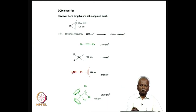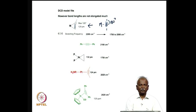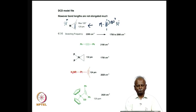This is usually understood in terms of the Dewar-Duncanson-Chatt model and is also indicated by stretching frequency changes. The stretching frequency of a C≡C typically lies in the region of 2200 cm⁻¹ for a free acetylene. For diphenylacetylene this is observed at 2180 cm⁻¹.